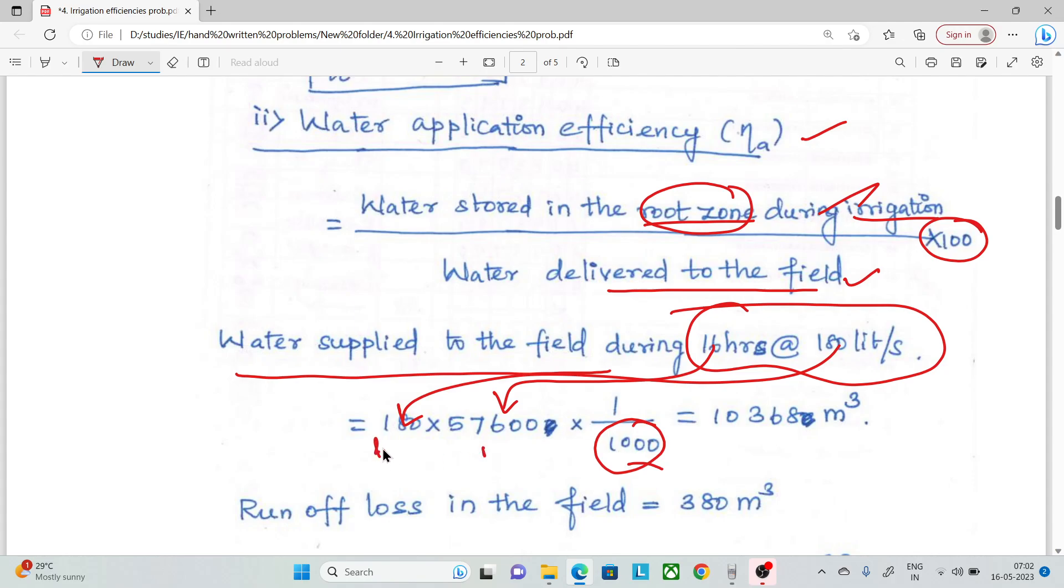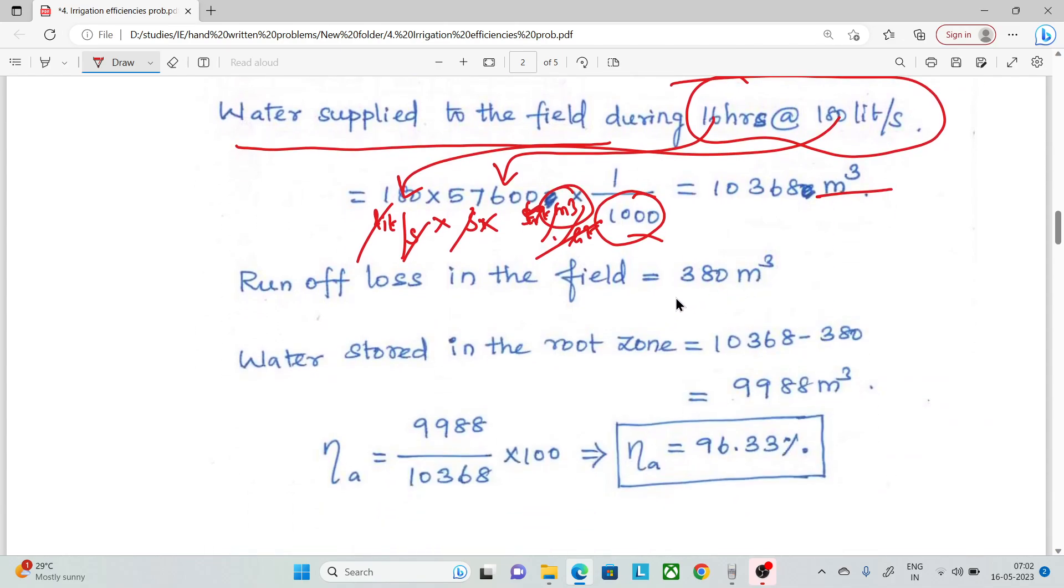Liters per second, here are seconds. This one is cubic meters per liter. The value is cubic meters. Liter cancels, second cancels. The remaining is cubic meters. If you look at the runoff loss, it's 380 cubic meters. We calculate the cubic meters here. This is the total water. If you subtract the loss, it is stored in the root. The stored water divided by applied water gives 96.33%.